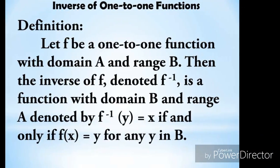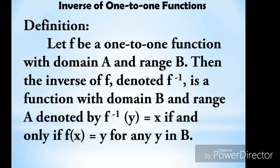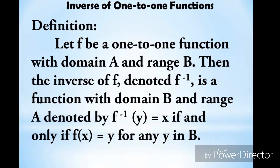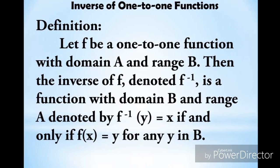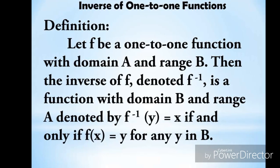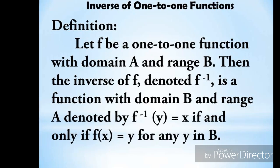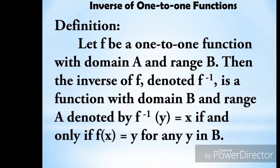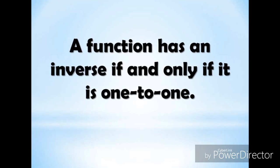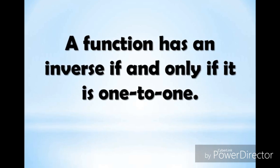The definition of the inverse of a one-to-one function: let f be a one-to-one function with domain A and range B. Then the inverse of f, denoted f⁻¹, is a function with domain B and range A, defined by f⁻¹(y) = x if and only if f(x) = y for any y in B. Remember that a function has an inverse if and only if it is one-to-one.